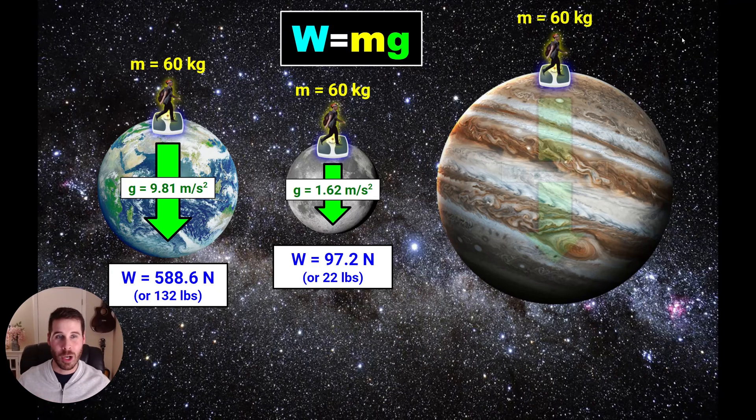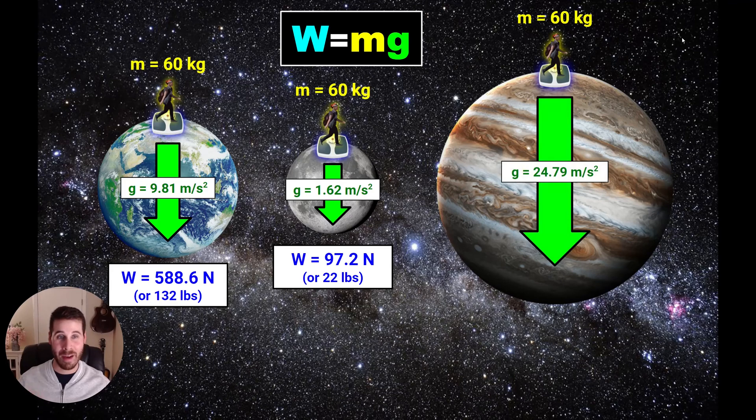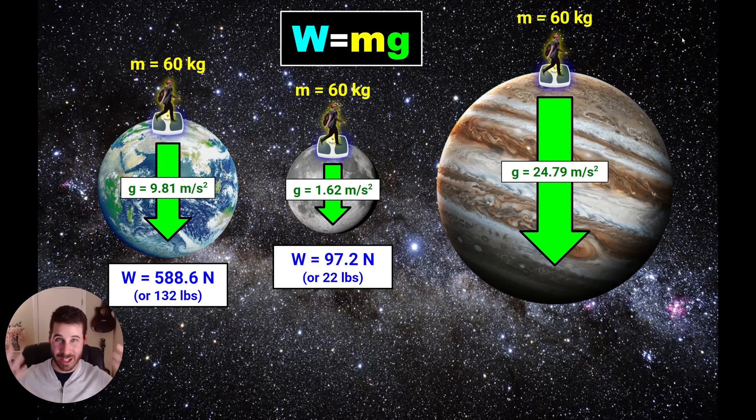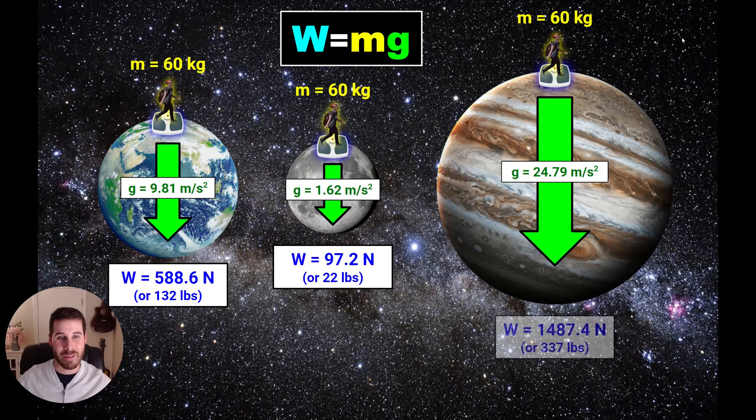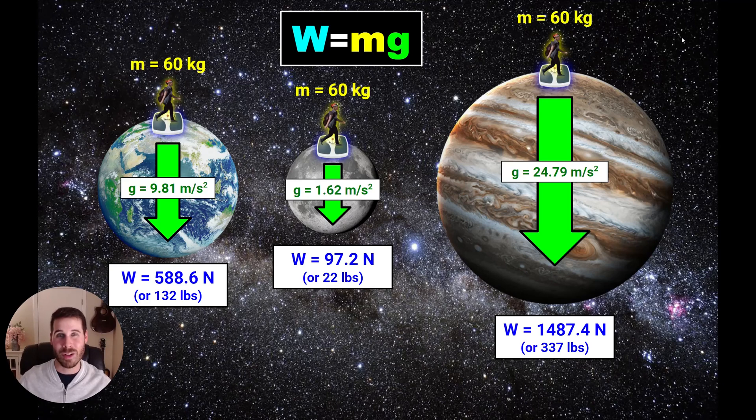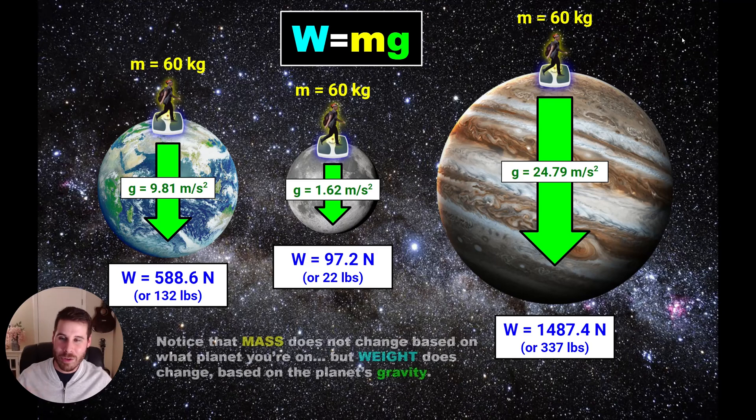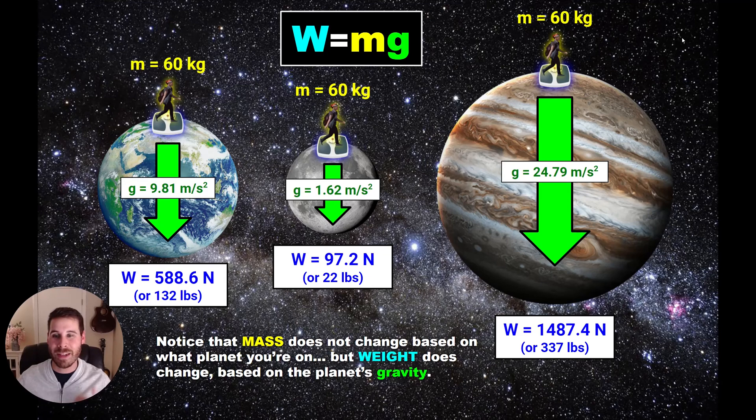Finally, if we put this person on Jupiter, where the acceleration due to gravity is a hefty 24.79 meters per second squared, that's the rate at which things will fall on Jupiter. So if you drop an object, it's going to fall really quickly. This mass multiplied by this acceleration due to gravity gives a staggering weight of 1,487.4 Newtons, or approximately 337 pounds. And what you should notice is between all these three examples, mass does not actually change based on what planet you're on. Instead, weight changes. That's based on how much gravity the planet has.